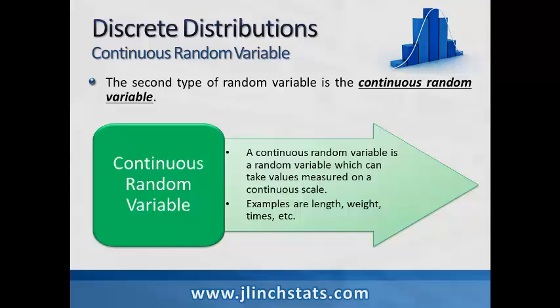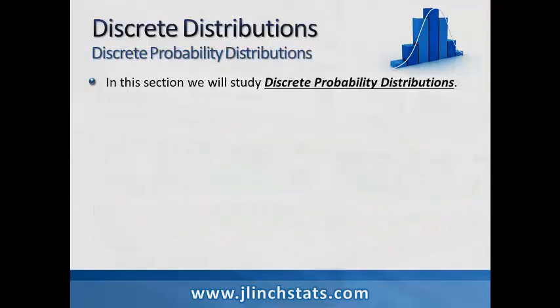So once again, we have two types of random variables. We have discrete random variables which basically take on only counting values, and we have continuous random variables that can take on any values within a range of numbers. In this section, we're going to study discrete probability distributions.